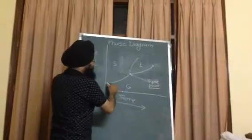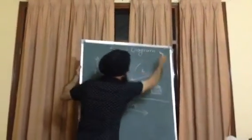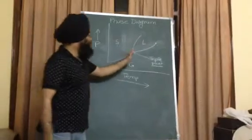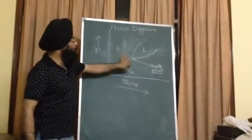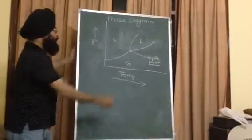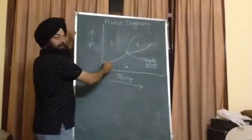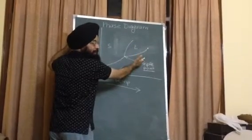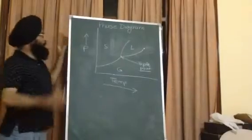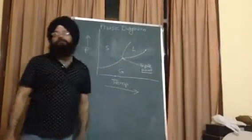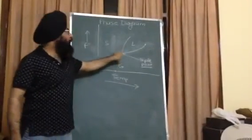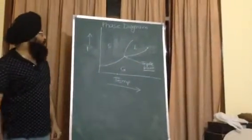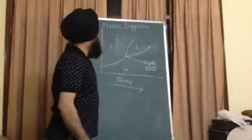A unary phase diagram for most substances contains three lines, and these lines show the separation between two different phases. This line separates the solid phase from the gaseous phase, this line separates liquid from gaseous phase, and this line differentiates between solid and liquid phase. At the point where all three lines meet, this is known as the triple point.